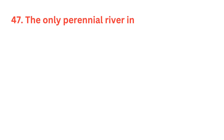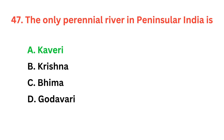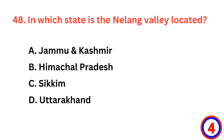The only perennial river in peninsular India is? The correct answer is option A, Kaveri. In which state is the Nalling Valley located? The correct answer is option D, Uttarakhand.